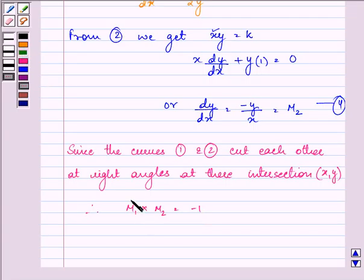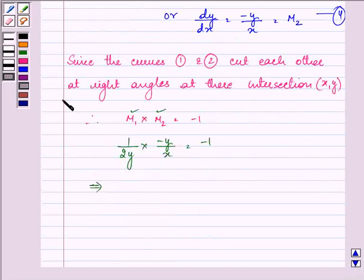Let us substitute the values of m1 and m2 from equations 3 and 4. So 1/(2y) times negative y/x equals negative 1, or negative 1/(2x) equals negative 1, which further implies 2x equals 1.